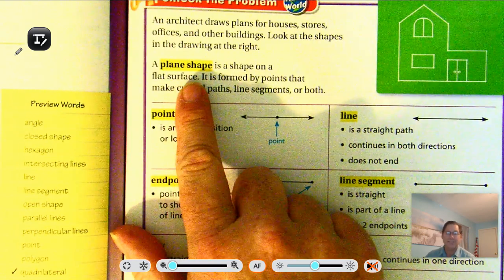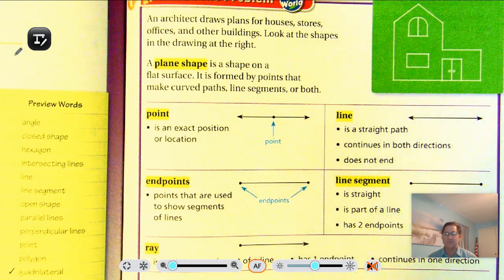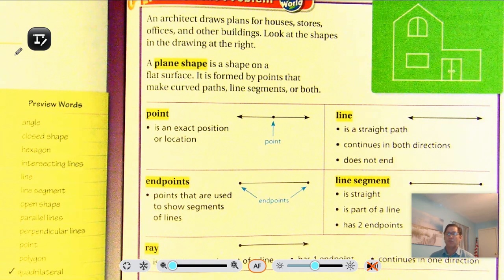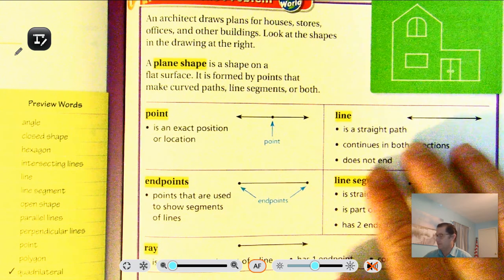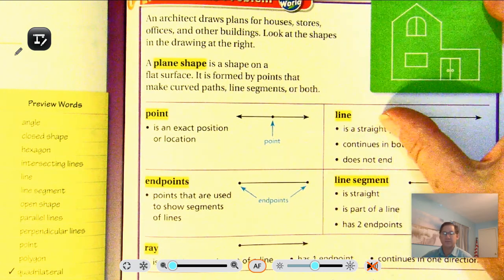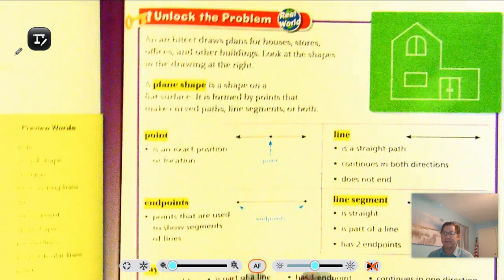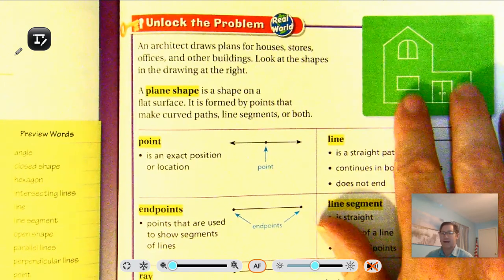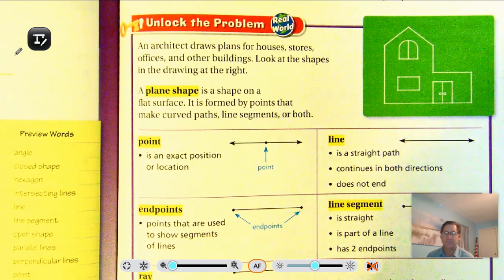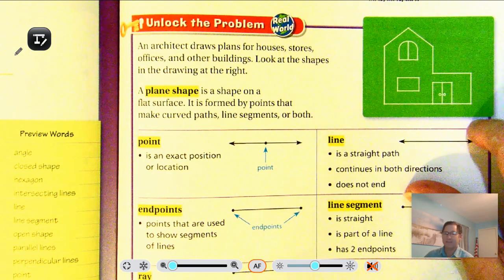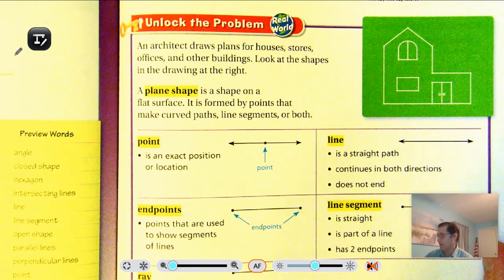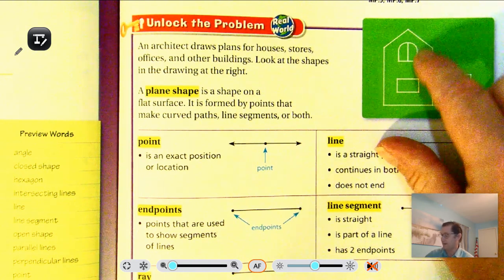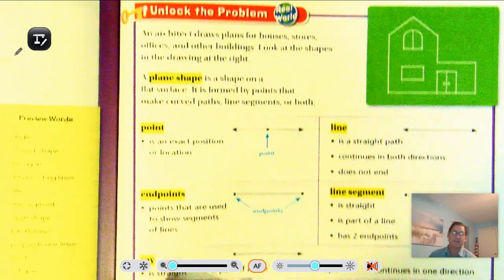A plane shape is a shape on a flat surface. It is formed by points that make curved paths, line segments, or both. The flat surface is represented by the green background — the house is flat, not coming up out of the page, and it's made up of line segments, curved paths, or both.